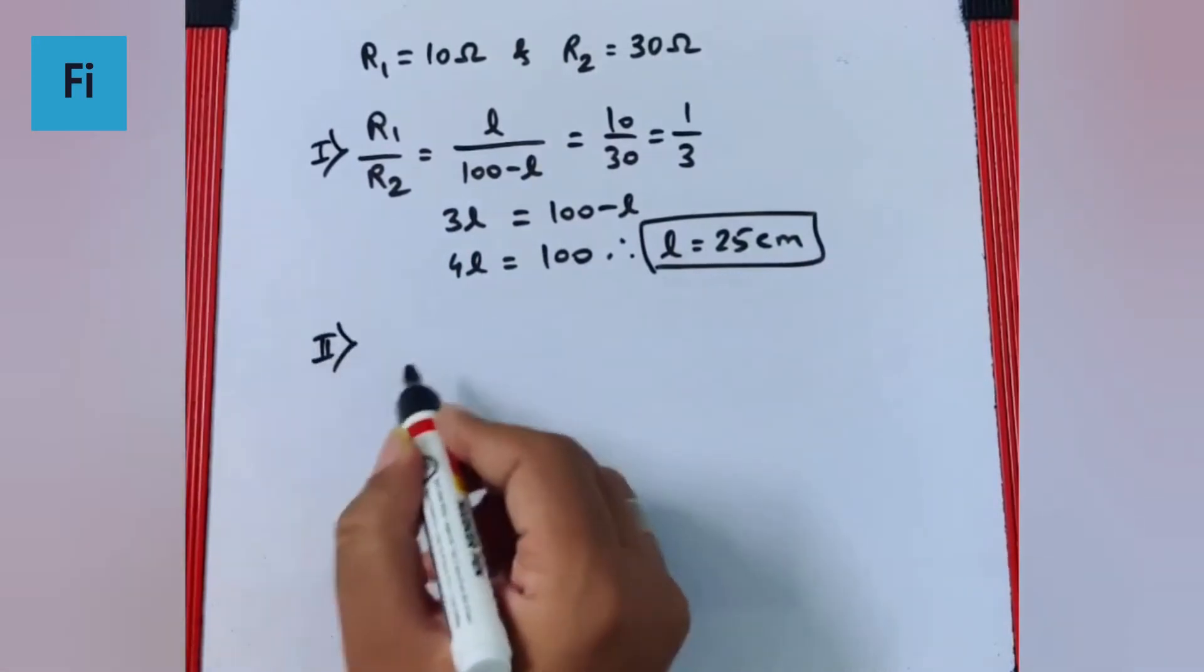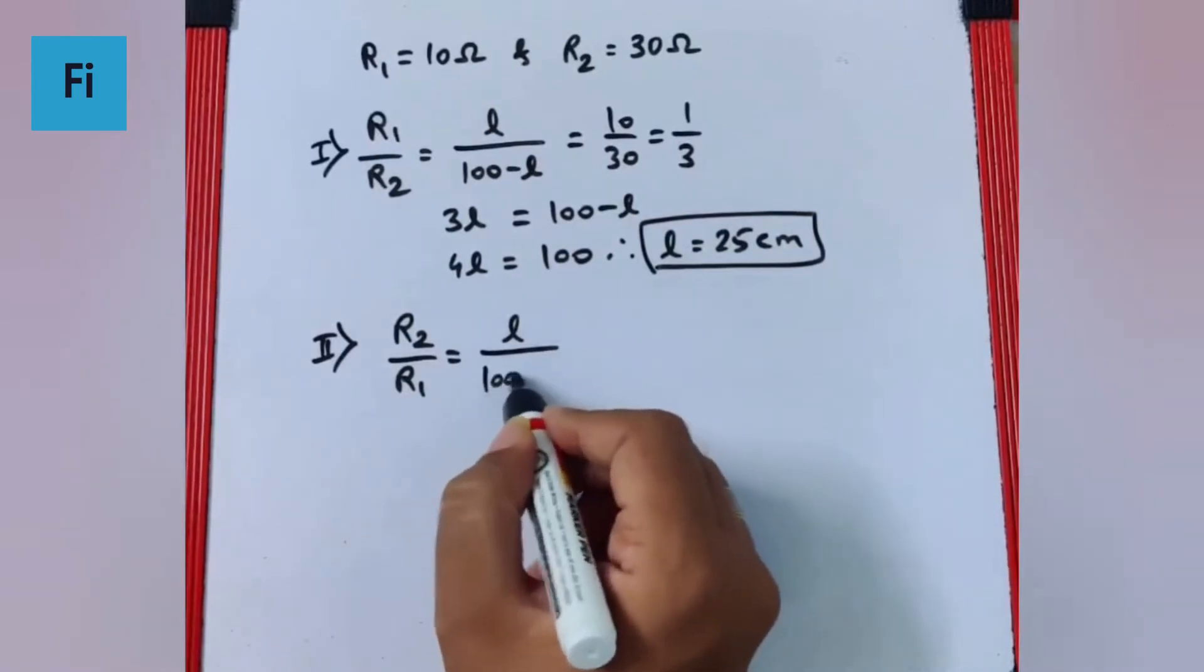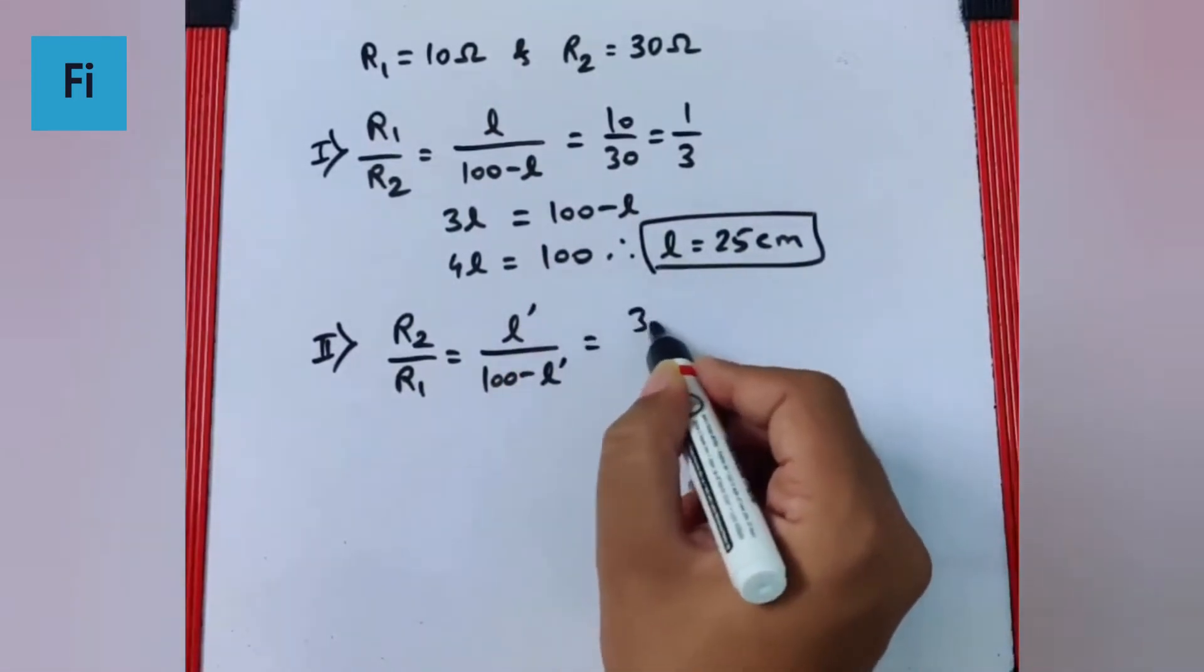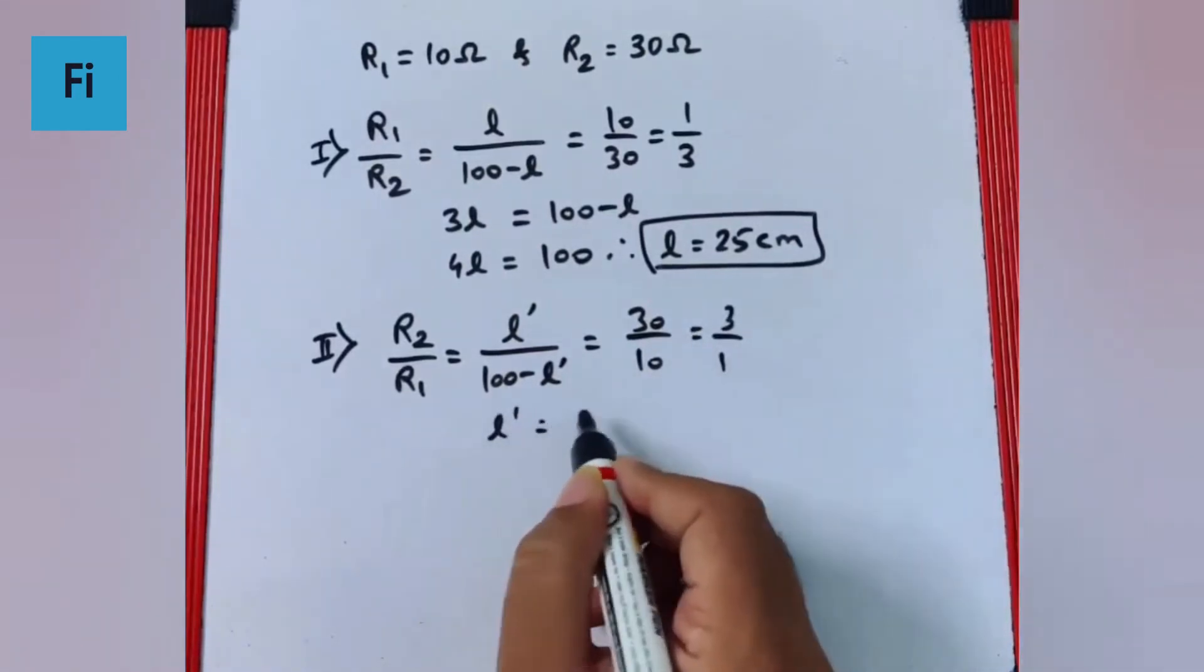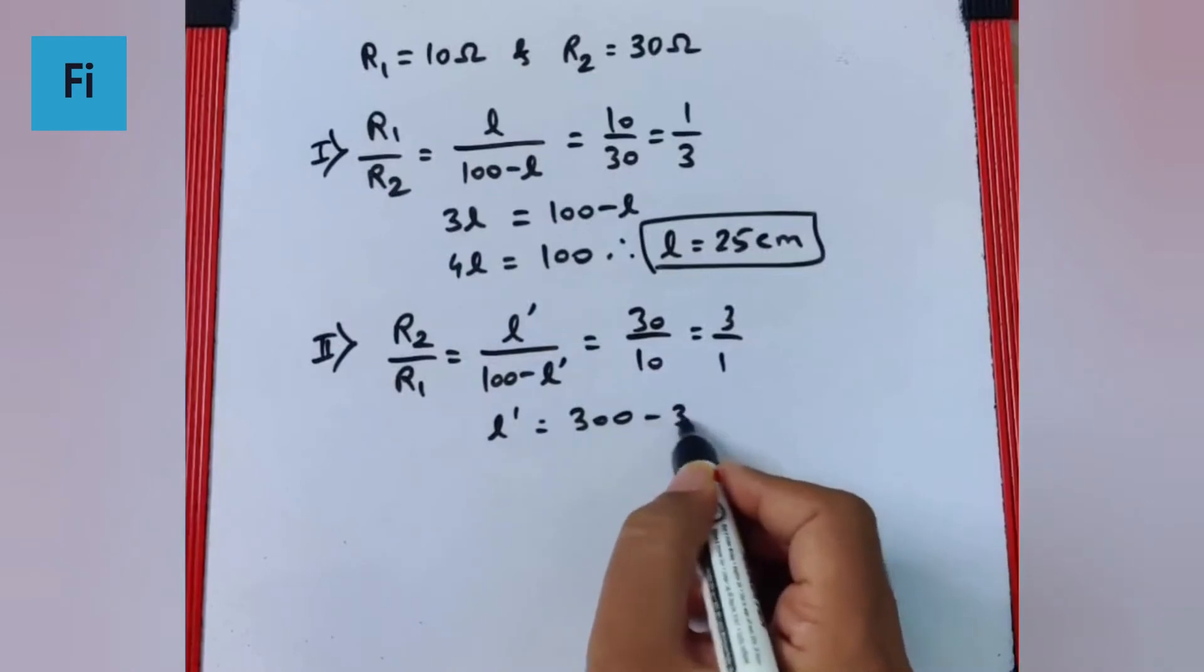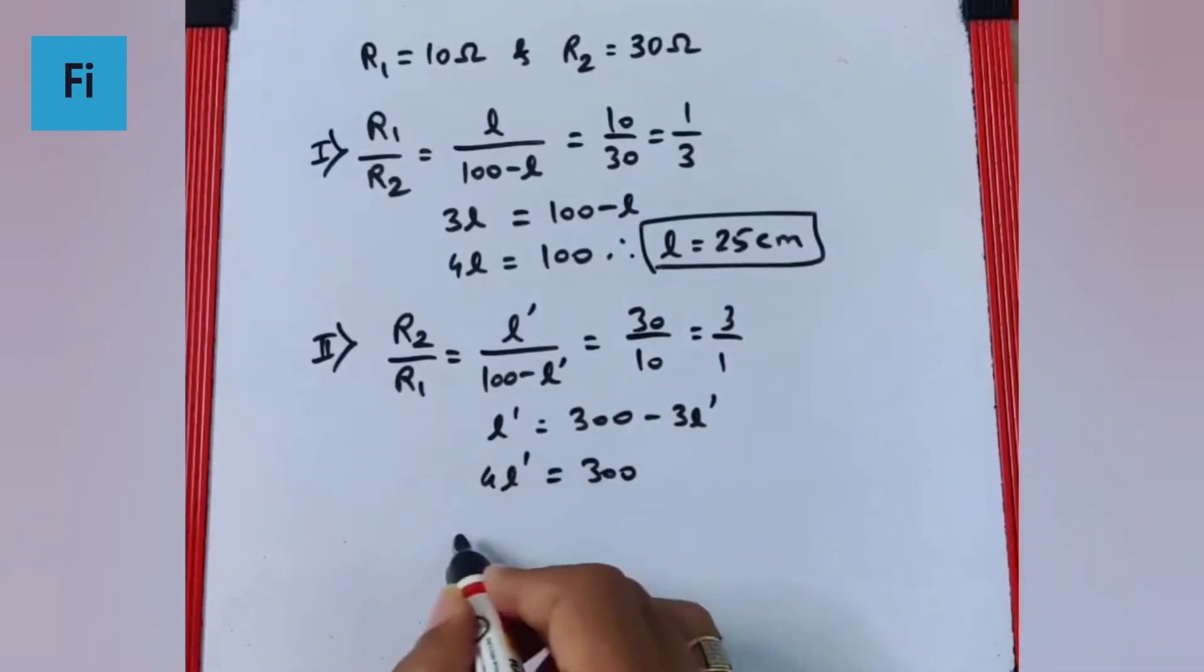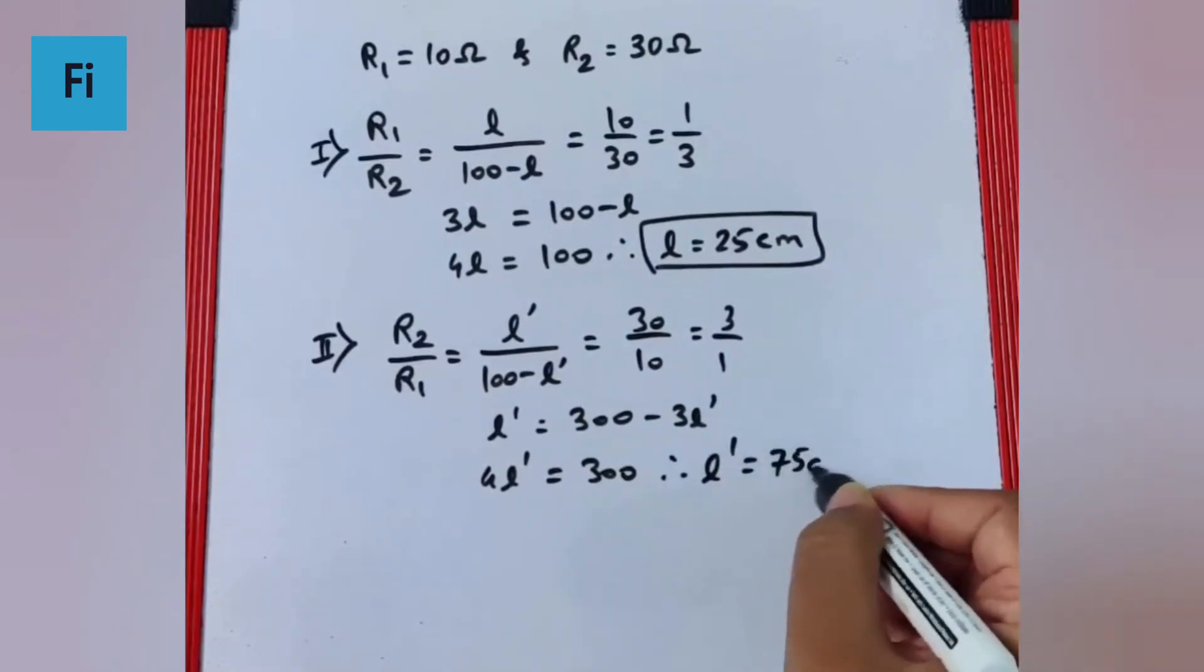In the second case, if they are interchanged, it will be R2 by R1 which is l by 100 minus l. To avoid confusion I'm putting l dash, so that is 30 by 10 which is 3 by 1. So l dash equals 300 minus 3l dash, meaning 4l dash will be 300. That means l dash value is 75 centimeter.